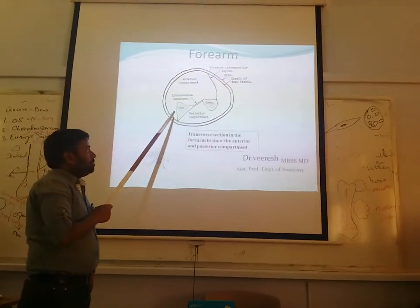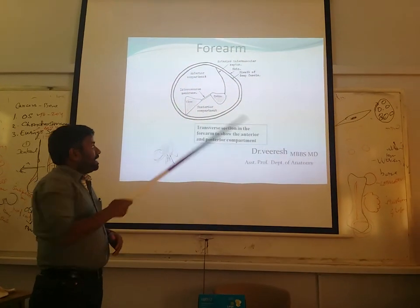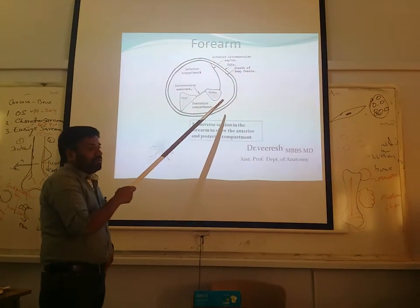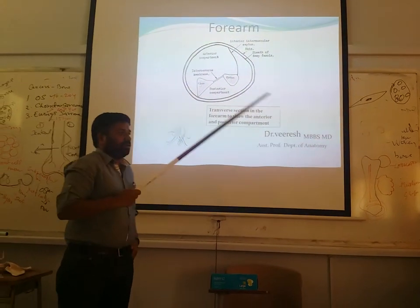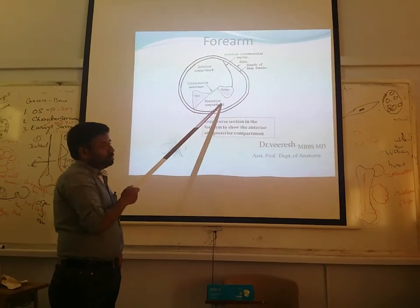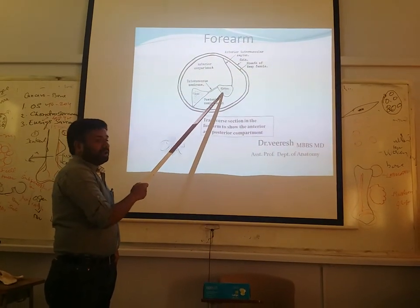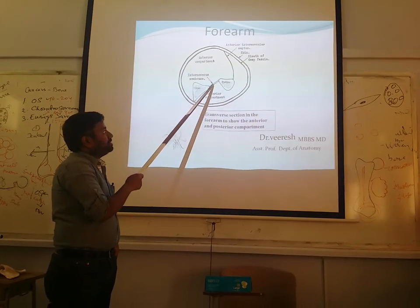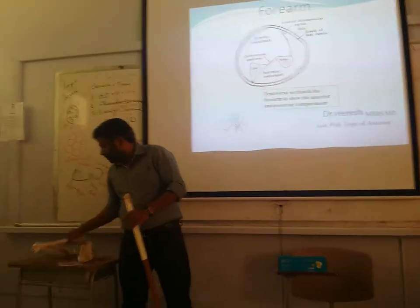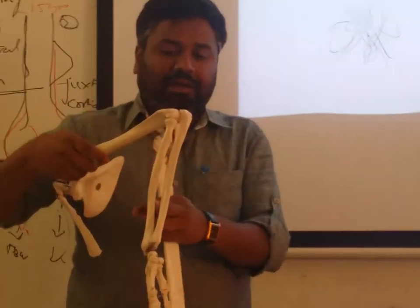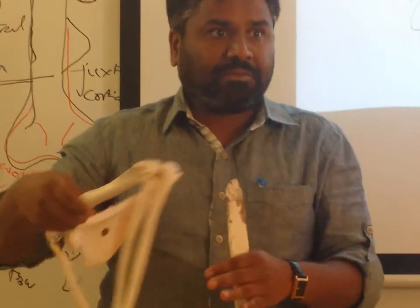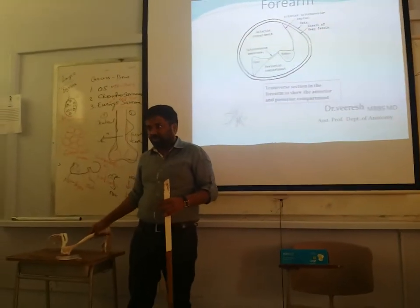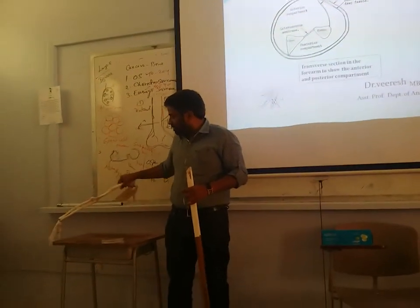The ulna divides the anterior and posterior compartments on the medial side. On the lateral side, there is a deep fascia which runs between the radius and the skin, dividing the forearm completely into two compartments. Between the ulna and the radius, there is a gap, and between the two borders there is a membrane called the interosseous membrane — between the two bones.